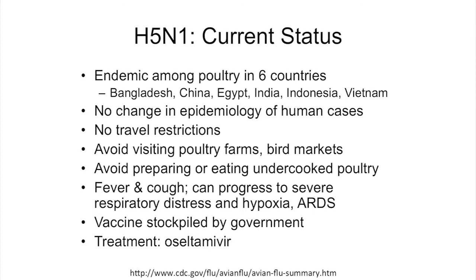If a patient develops H5N1 influenza, treatment is oseltamivir, which still seems effective against that avian flu strain. An H5N1 vaccine has been developed and stockpiled by the government so that if this strain becomes pandemic, supply is available. However, the vaccine is not commercially available — you can't give it to a traveler — it exists only for governmental stockpile purposes.